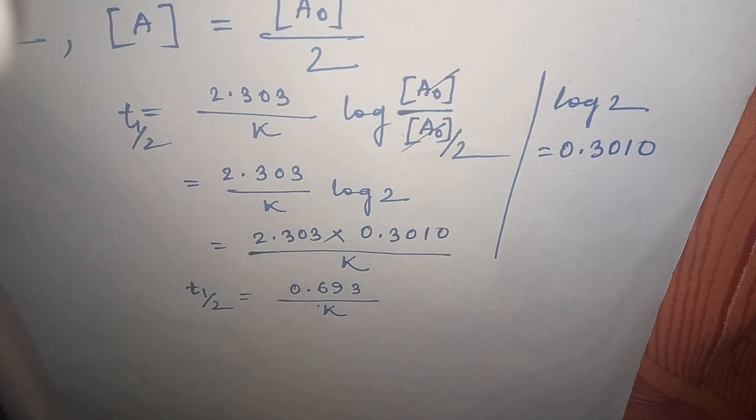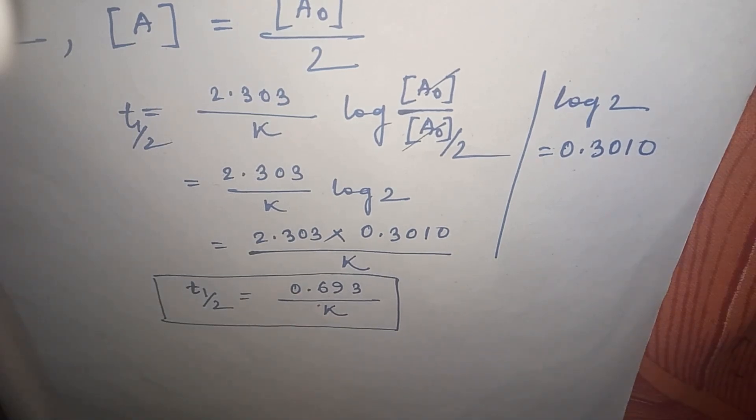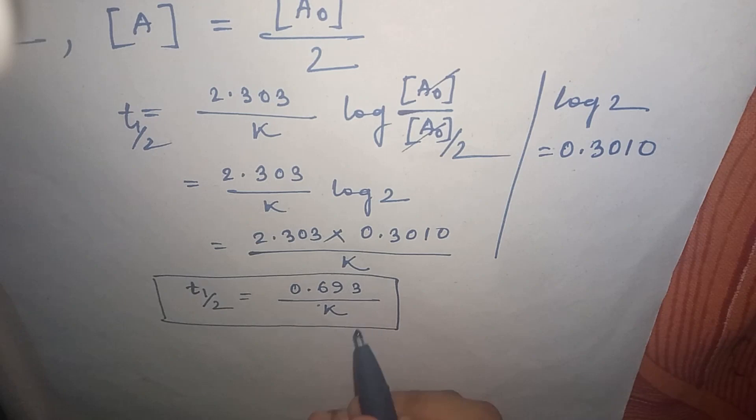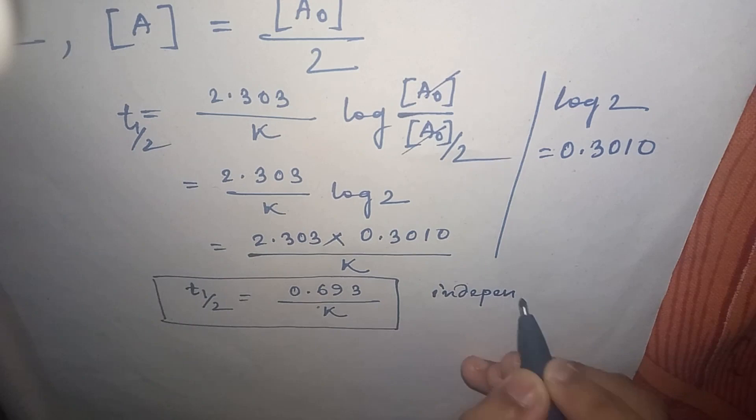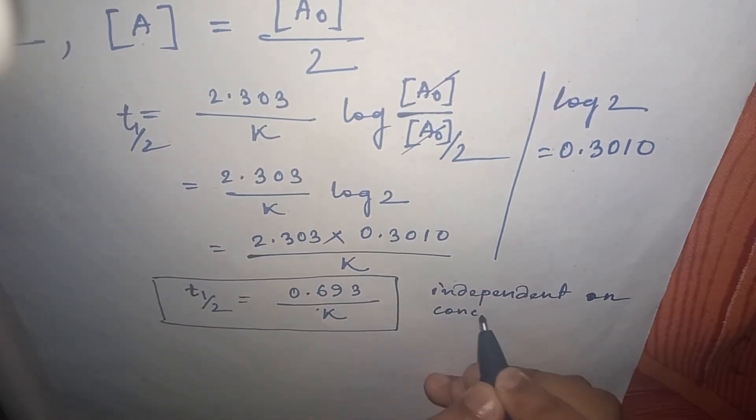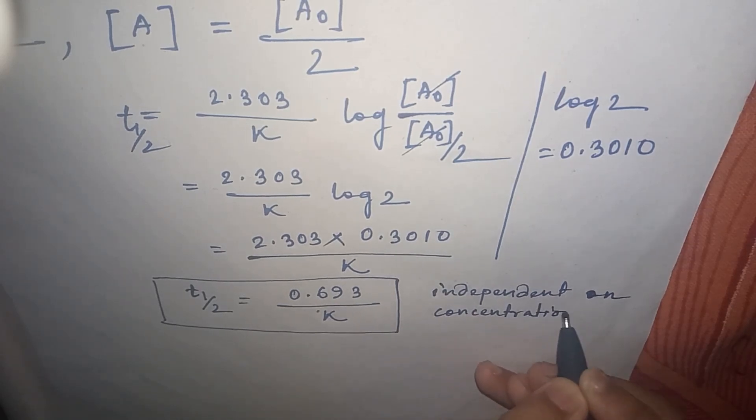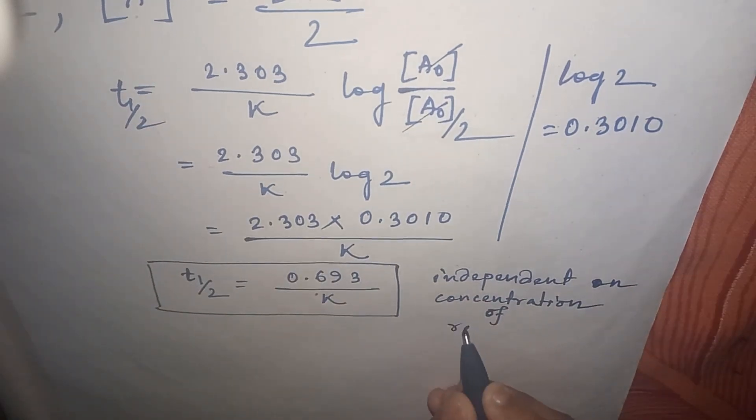And it is equal to T half. So the formula of T half for first-order reaction is T half equals 0.693 by K. Now you can see in this formula concentration is totally absent, so we can say this formula is independent on concentration of reactant.